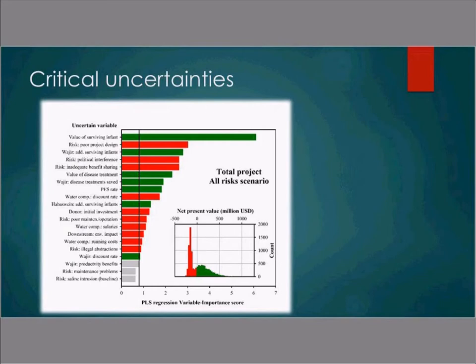Variables interesting to investigate further to reduce uncertainty include: value of a surviving infant, proof of project design, the additional number of children surviving, risk of political interference, and several others. By looking in more detail at these variables and doing proper research to narrow down their uncertainties, we might reduce uncertainty around the overall investment. We also found that a number of variables relate to social and political tensions. Removing those, more hydrological variables — like the price of water and the number of people buying the water — come higher in the listing, and these need to be looked at seriously, particularly from the perspective of the water company.